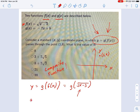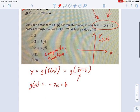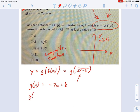So what I'm going to do is write the g equation. Remember what that is? g of x equals negative 7x plus b. I'm going to take this equation and everywhere I see x, I'm going to replace it with the square root of x minus 3.